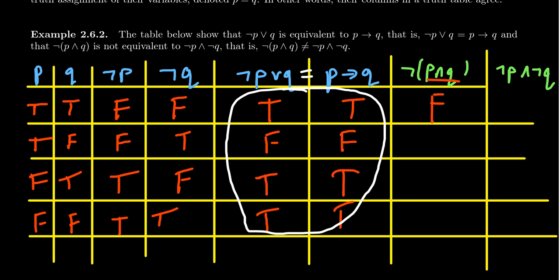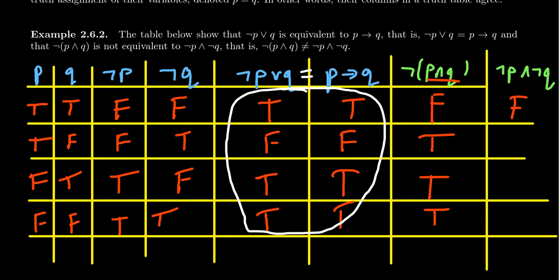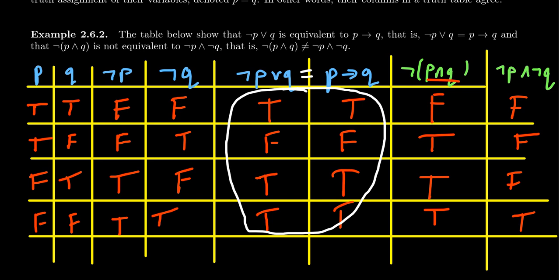For not (P and Q), the inner and statement P and Q gives true-true, true-false, false-true, false-false. The and is true only if both are true, so P and Q gives true, false, false, false. Taking the not switches those to false, true, true, true. For not P and not Q, we look at the negated columns: false-false gives false; true-false gives false; false-true gives false; true-true gives true. So not P and not Q gives false, false, false, true. When you compare the two columns side by side, there is agreement on some rows, but there is disagreement — one is true and the other is false on some rows. Because they disagree on some truth assignments, the two statements are not logically equivalent. Taking the not of an and statement is not the same thing as taking the and of the negated statements. The order of operations makes a big difference.